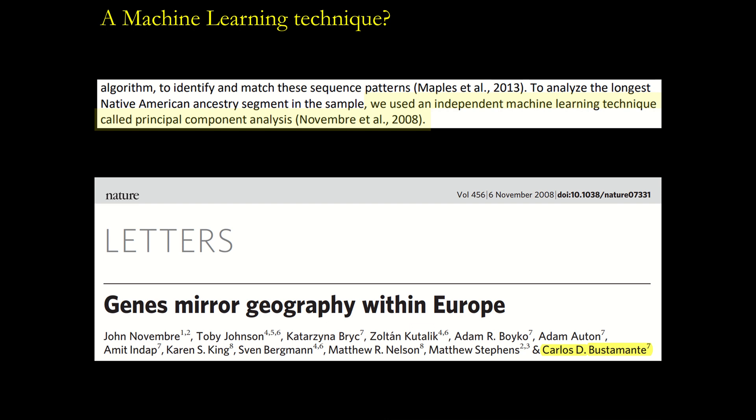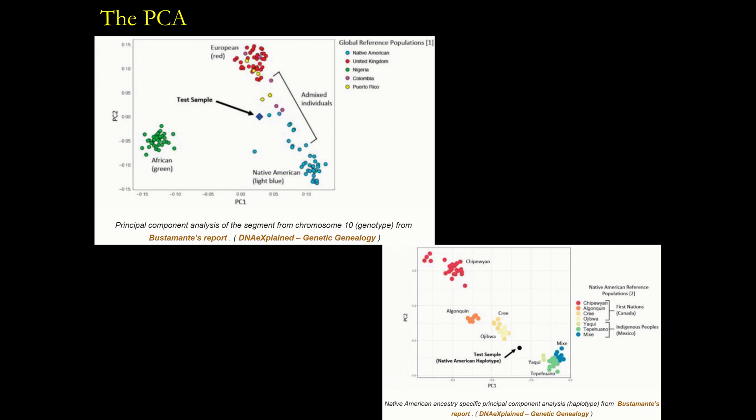The first PCA results showed that Warren's DNA clusters along the trajectory of European and Native Americans, somewhere with the admixed individuals. Recall what I told you before about mixed Native Americans — we cannot be certain that any of those Native Americans are unmixed. They are most likely all mixed with Europeans and Africans to various degrees. In the second analysis, Bustamante calculated PCA only for a Warren segment that came up in the previous analysis as Native American. And surprise, surprise — Warren ended up nestled safe and sound between a couple of Native American tribes.